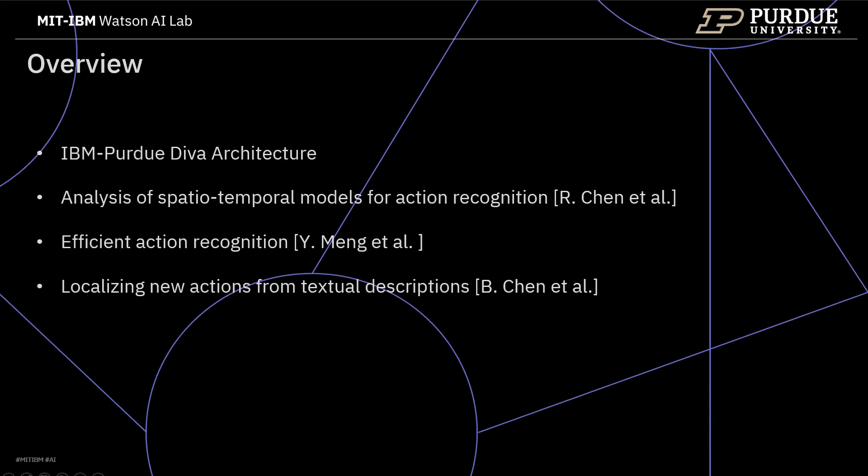First, I want to give you an overview of the following 20 minutes. I start with an overview of the IBM Purdue DIVA architecture. I then continue with an analysis of spatial temporal models for action recognition. I will dive a bit deeper into aspects of efficient action recognition and close this talk with an outlook on our work on zero-shot action localization from textual descriptions.